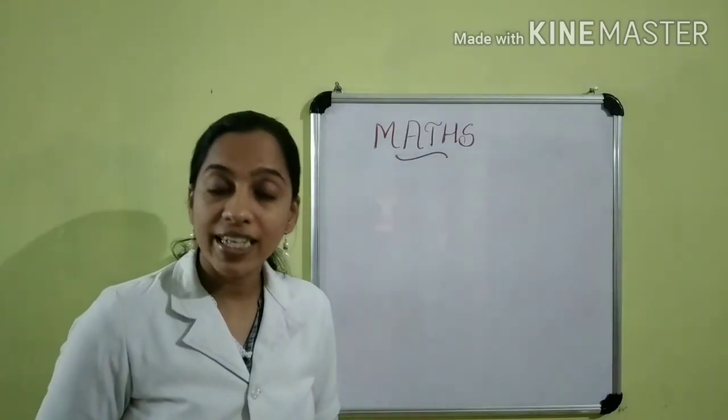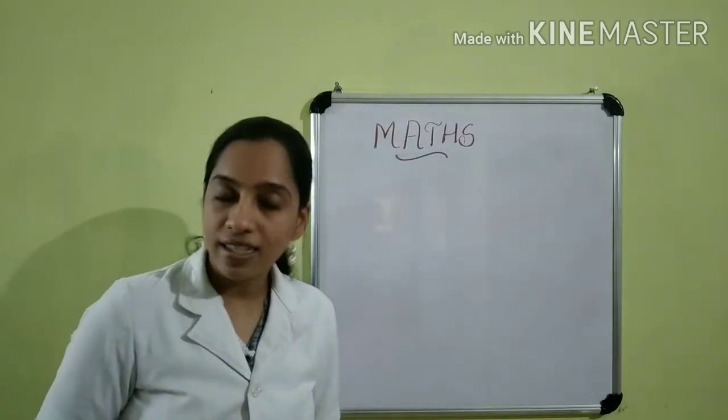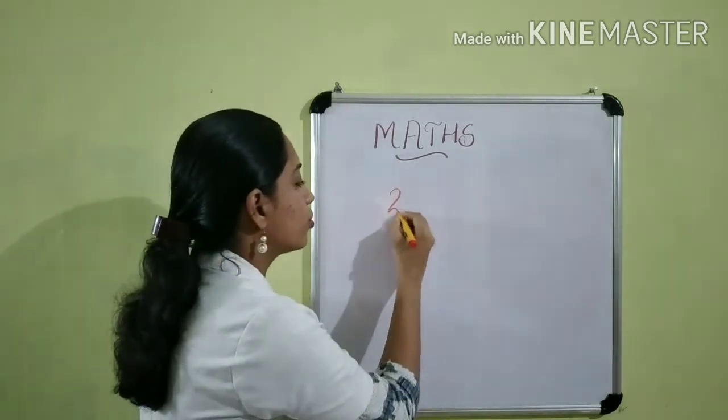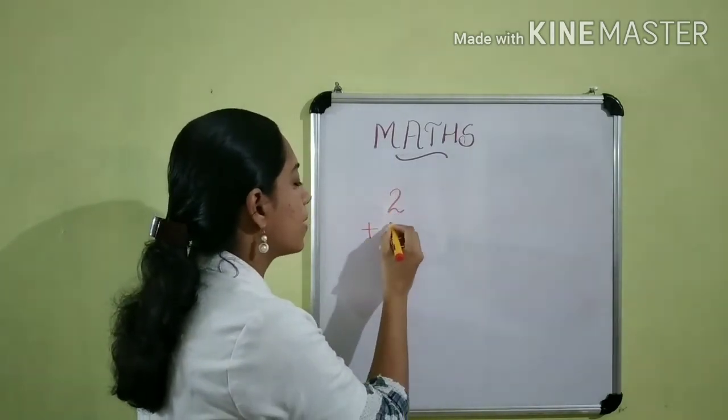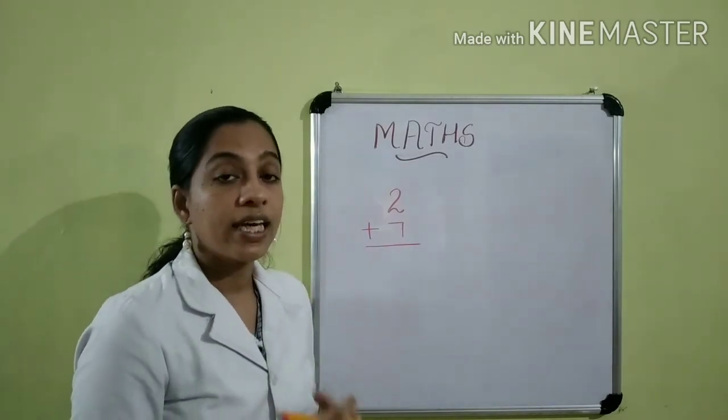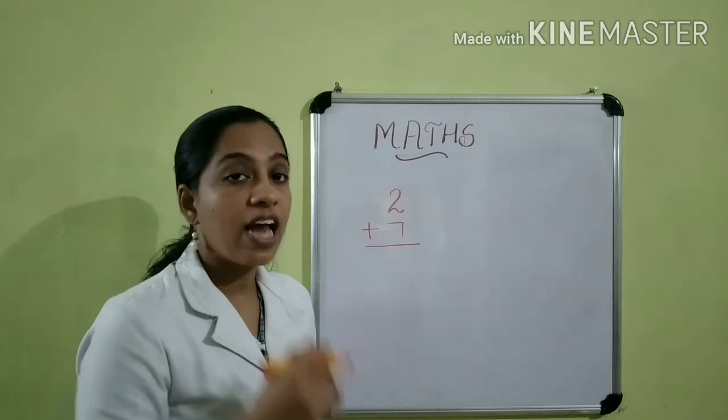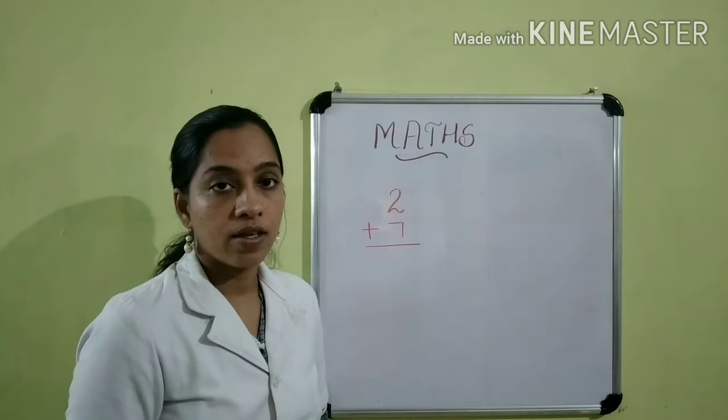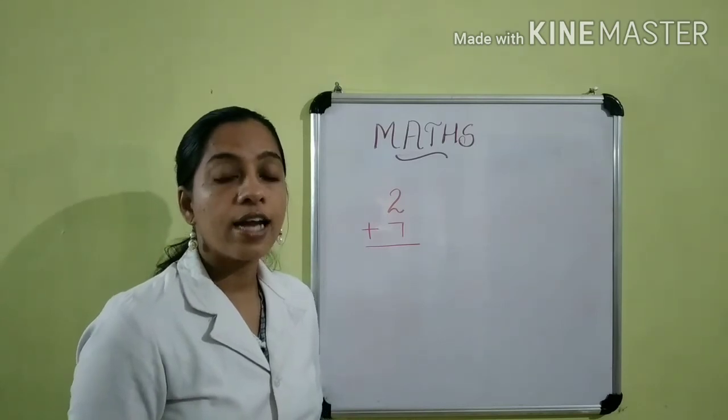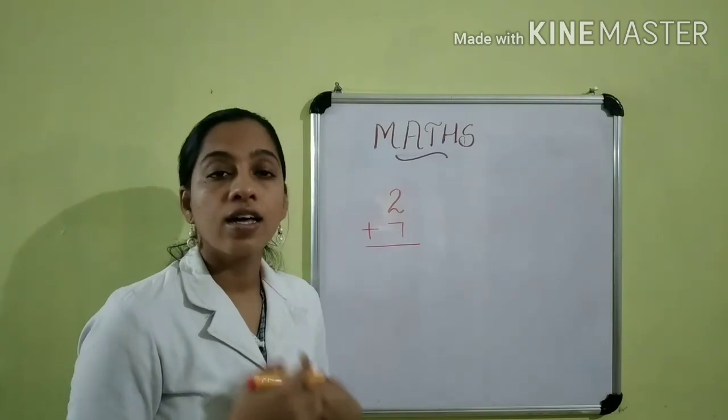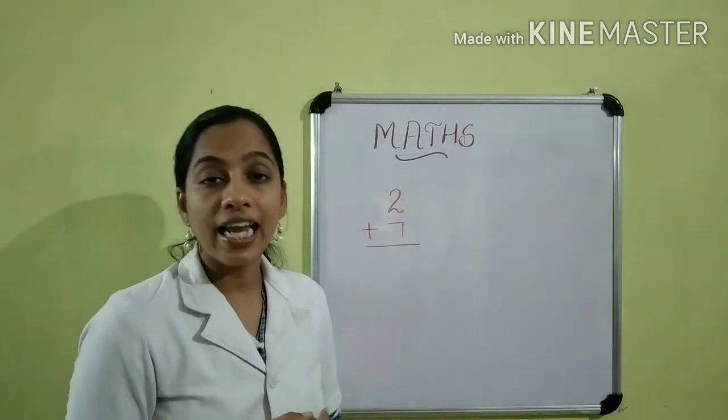Do you know what is vertical addition? Let us listen. Here, we have to add two plus seven. In vertical addition, we will arrange the numbers one below the other. Then, how do you find out the answer? For finding the answer, we can draw vertical lines.